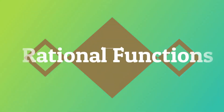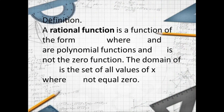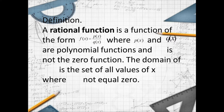Good day viewers. Our topic is about how to write rational functions to represent real life situations. A rational function is a function of the form f of x equals p of x over q of x, where p of x and q of x are polynomial functions and q of x is not the zero function. The domain of f of x is the set of all values of x where q of x is not equal to zero.